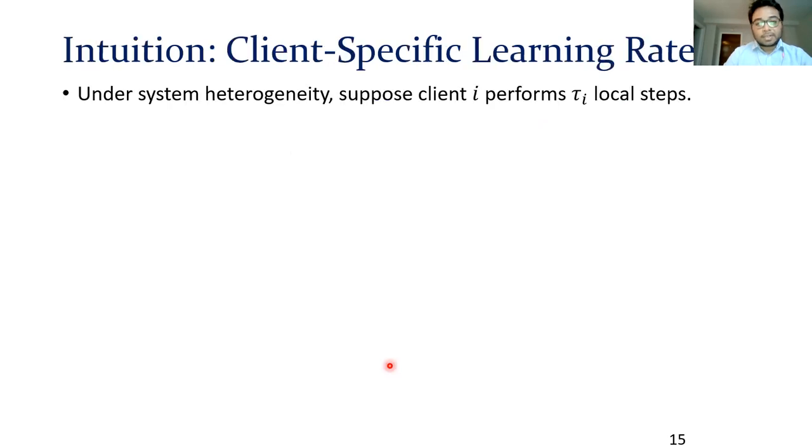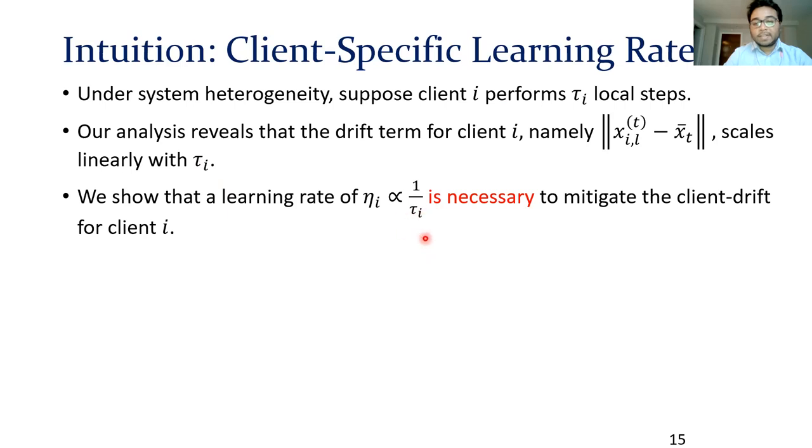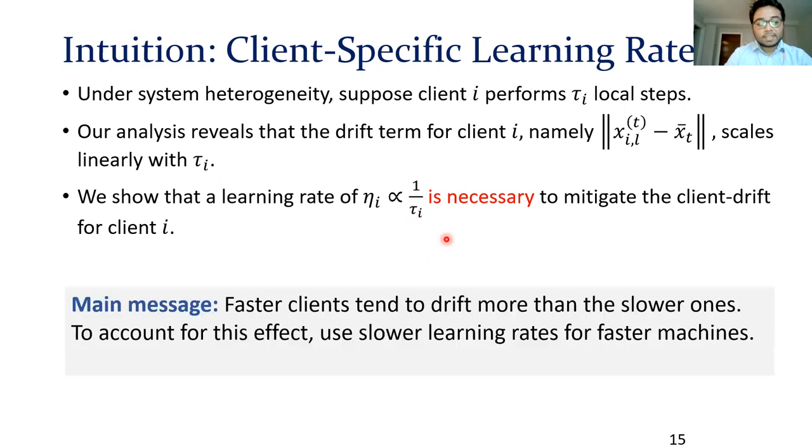Suppose due to systems heterogeneity, client i performs tau i local steps. What our analysis reveals is that the drift for client i scales linearly with tau i, and having a learning rate that scales inversely with tau i turns out to be necessary to mitigate the client drift for client i. So what this is saying is that the faster clients have a tendency to drift more than the slower ones. To account for this, we need to have slower learning rates for the faster machines.